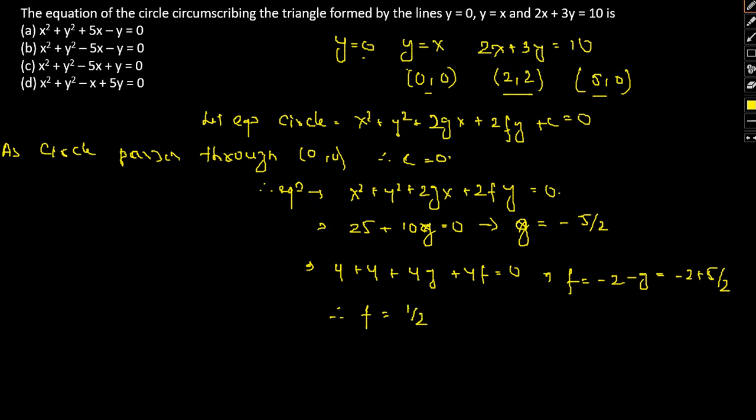Putting these values into the equation: x² + y² + 2(-5/2)x + 2(1/2)y = 0, which simplifies to x² + y² - 5x + y = 0. Looking at the options, option C is the correct answer.